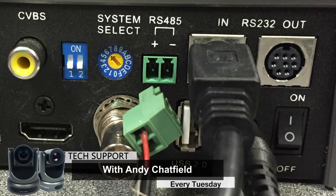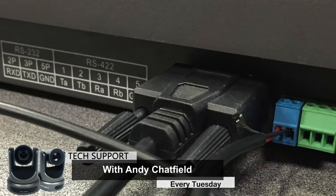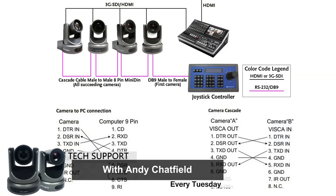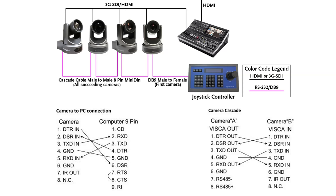Basically, RS-232 is the standard for serial control in this industry. It consists of essentially three cables. Transmit, receive, and ground are the most important. There are other things, different forms of the protocol that have other things built in, but for the most part it's receive, transmit, and ground.